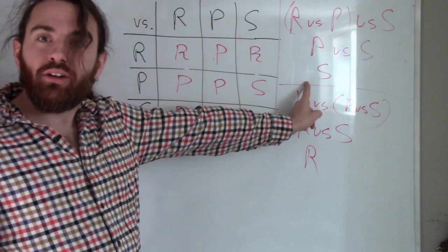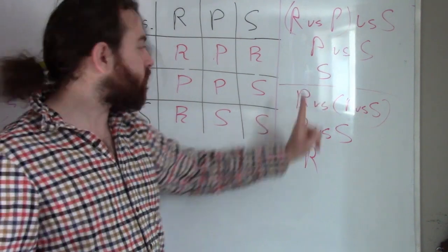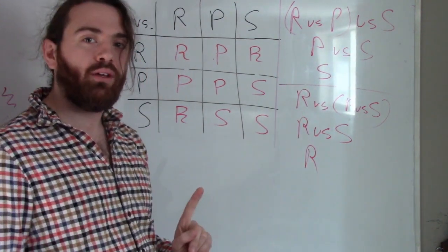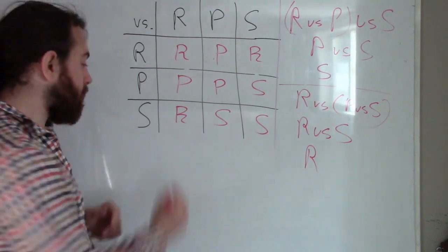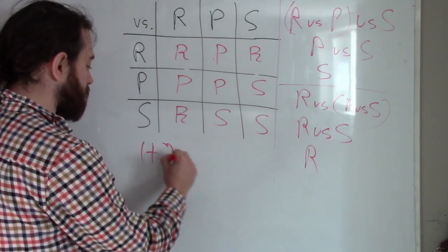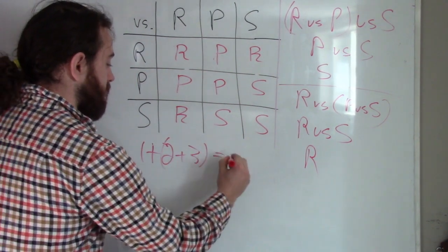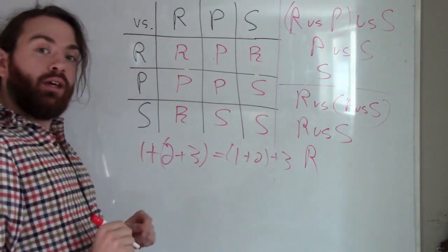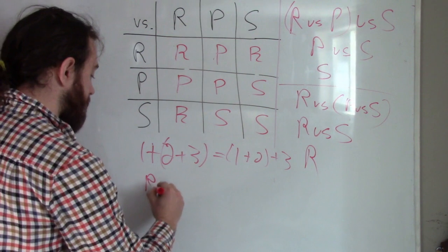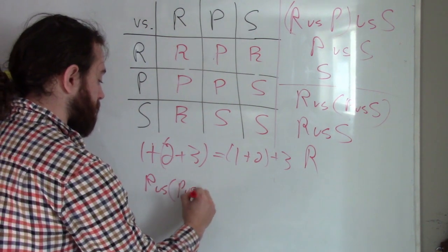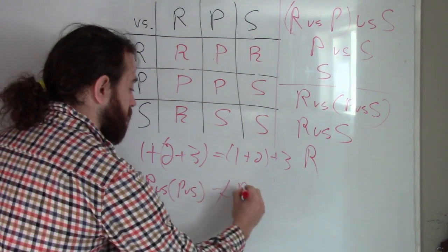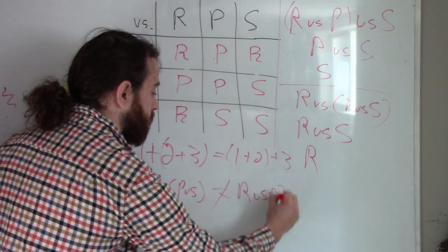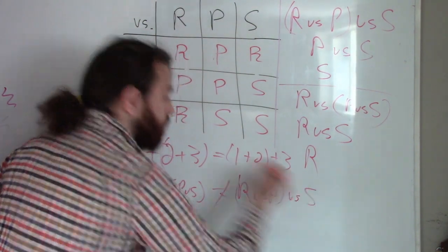But look, there's a difference here. Scissors and rock are not the same. So well, for ordinary everyday numbers, we know that one plus two plus three is equal to one plus two plus three. It is not true that rock versus paper versus scissors is equal to rock versus paper versus scissors.